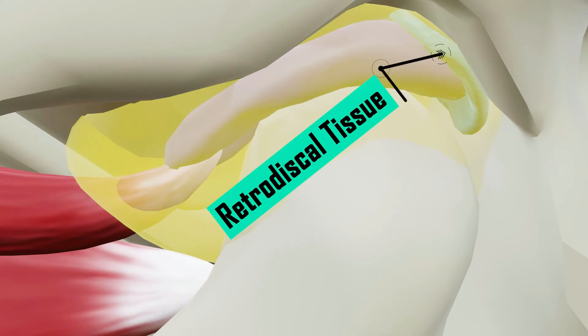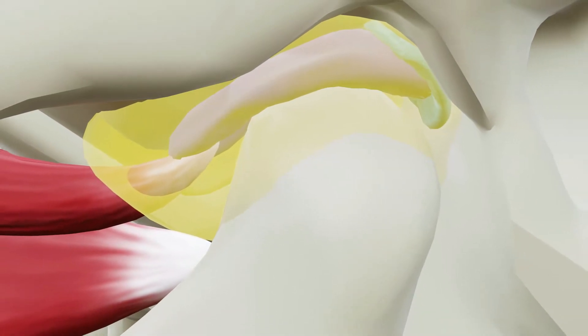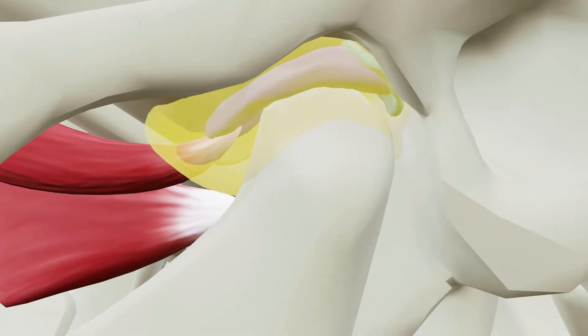Unlike the disc itself, the retrodiscal tissue is vascular and highly innervated. As a result, the retrodiscal tissue is often a major contributor to the pain of temporomandibular disorder (TMD), particularly when there is inflammation or compression within the joint.